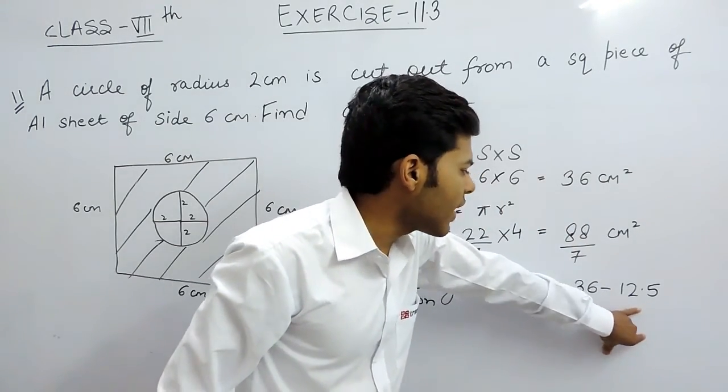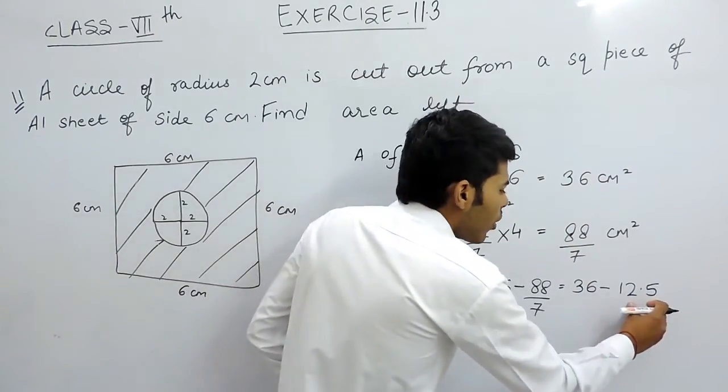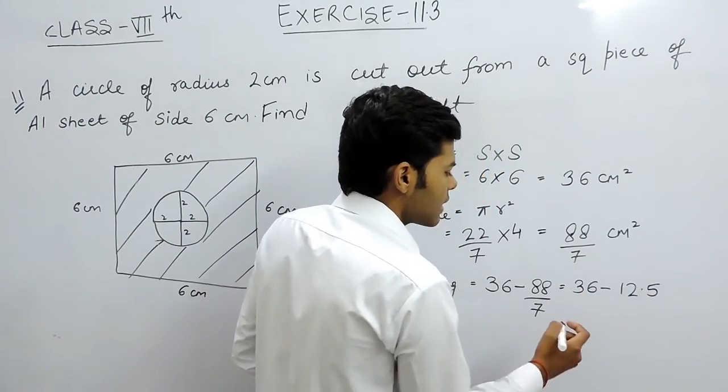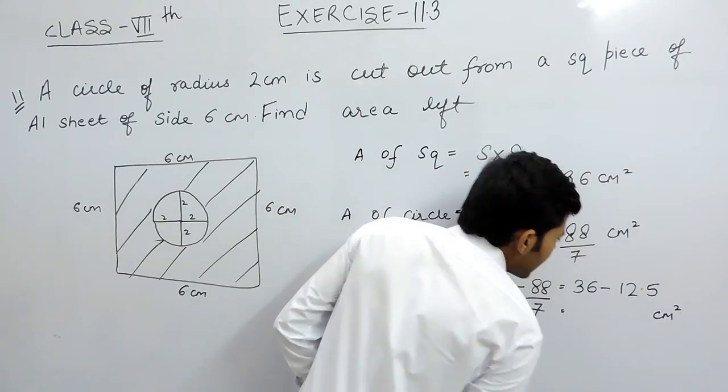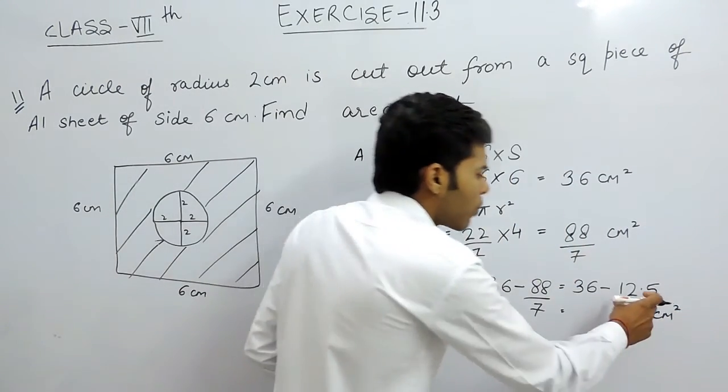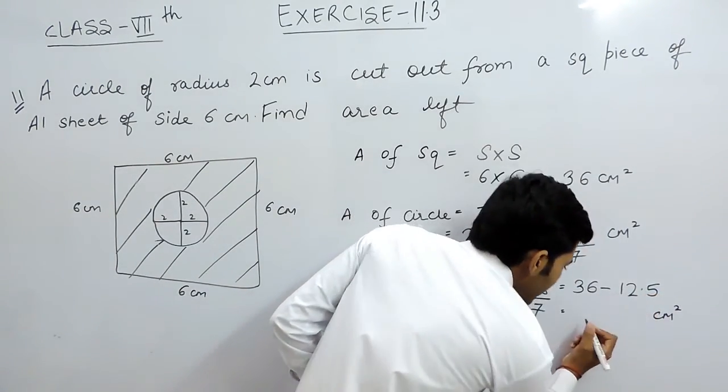So we will subtract 12.5 from 36 and we will get the required answer, and the unit will be cm square. So 36 minus 12.5, that will be 23.5.